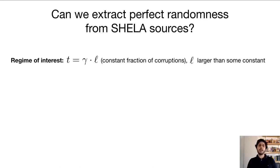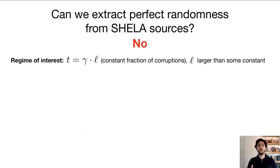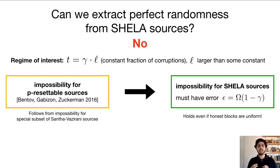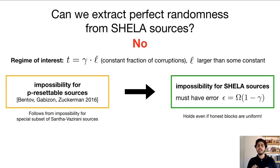The most basic question we can ask about SHELA sources is whether we can extract perfect randomness from them, like we could in the analogous non-adversarial setting. Looking at the regime where we have a constant fraction of adversarial corruptions and the number of SHELA blocks is larger than some fixed constant, the answer turns out to be no. We can see this at a high level by relating the impossibility of extraction for SHELA sources to the impossibility of extraction for so-called somewhere-resettable sources, which were also introduced recently, going all the way back to the impossibility result for a special subset of Santha-Vazirani sources. This impossibility result is quite strong in the sense that it holds even when the blocks of a SHELA source are perfectly uniform.